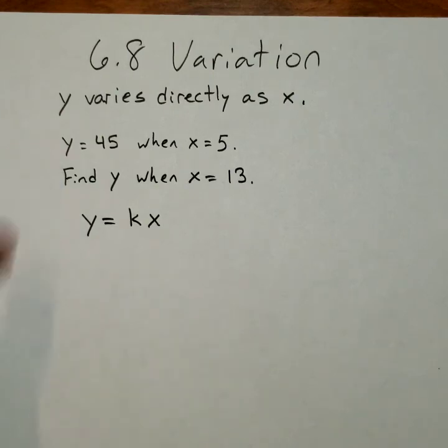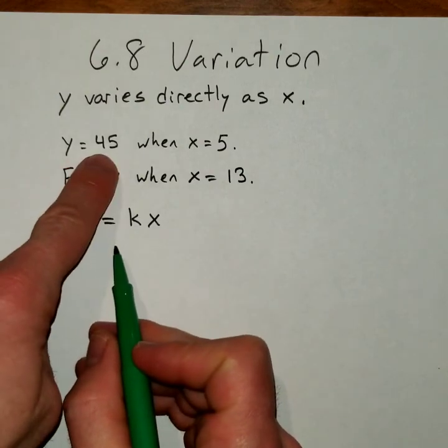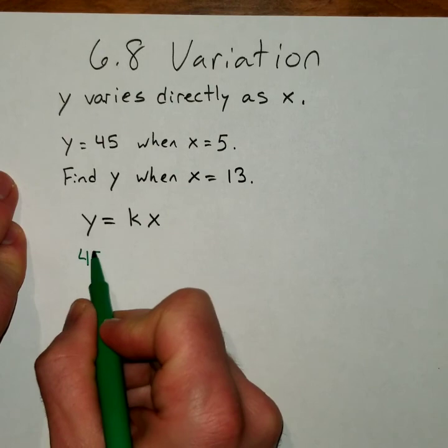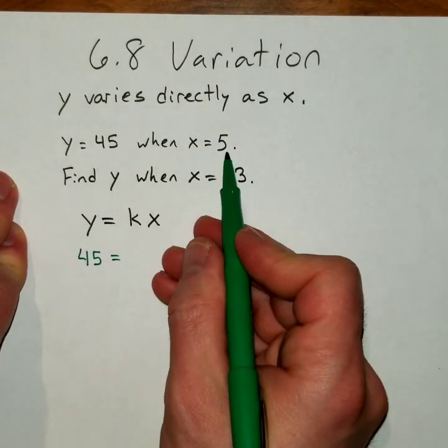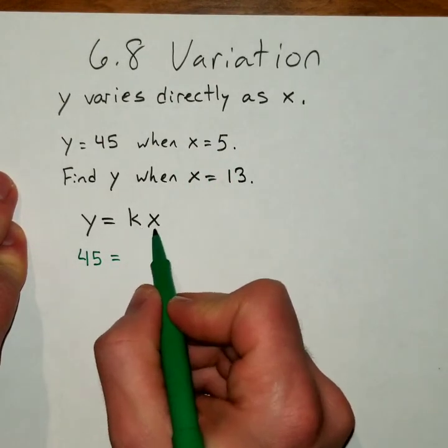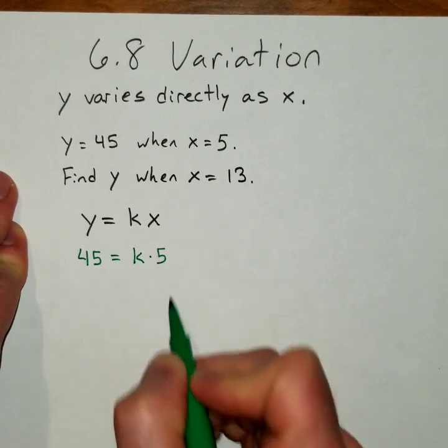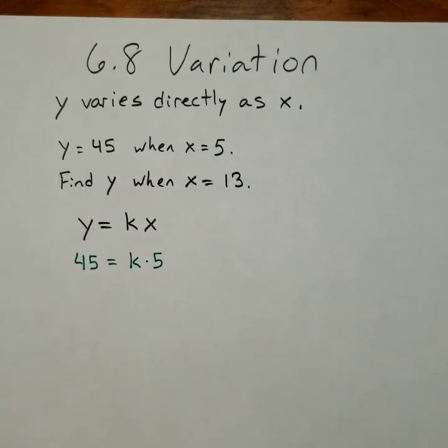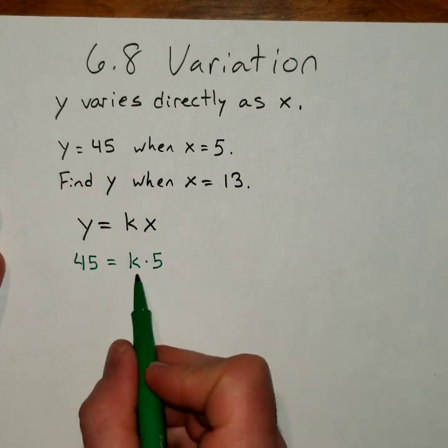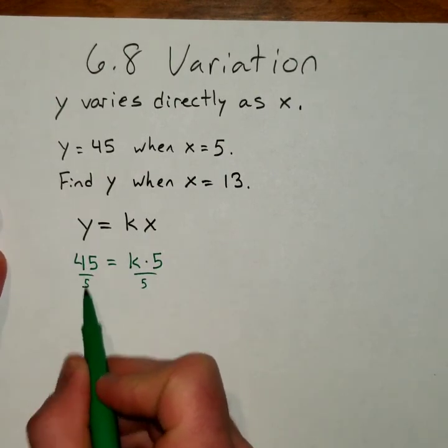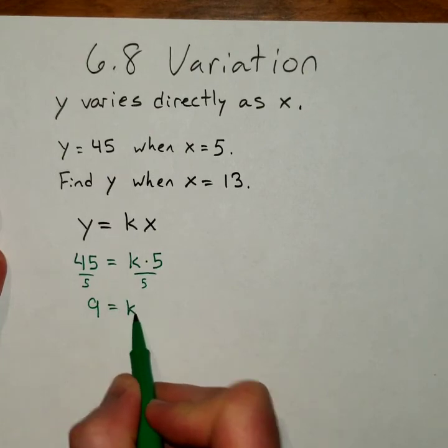Now, the second line gives us some information about y and x. The second line says that y is 45 when x is 5. Well, we don't know k, but we know y and x. So I just plug in my two values, 45 and 5. The only thing I have left is k, so let's solve for k. If I divide both sides by 5 here, then you're going to have 9 is equal to k.